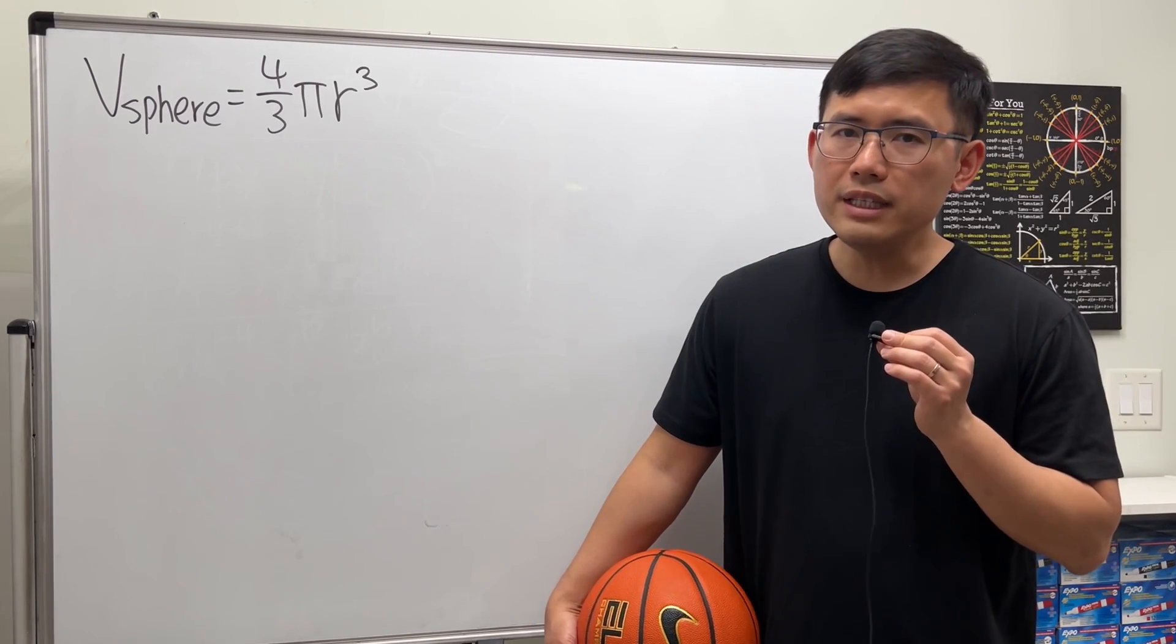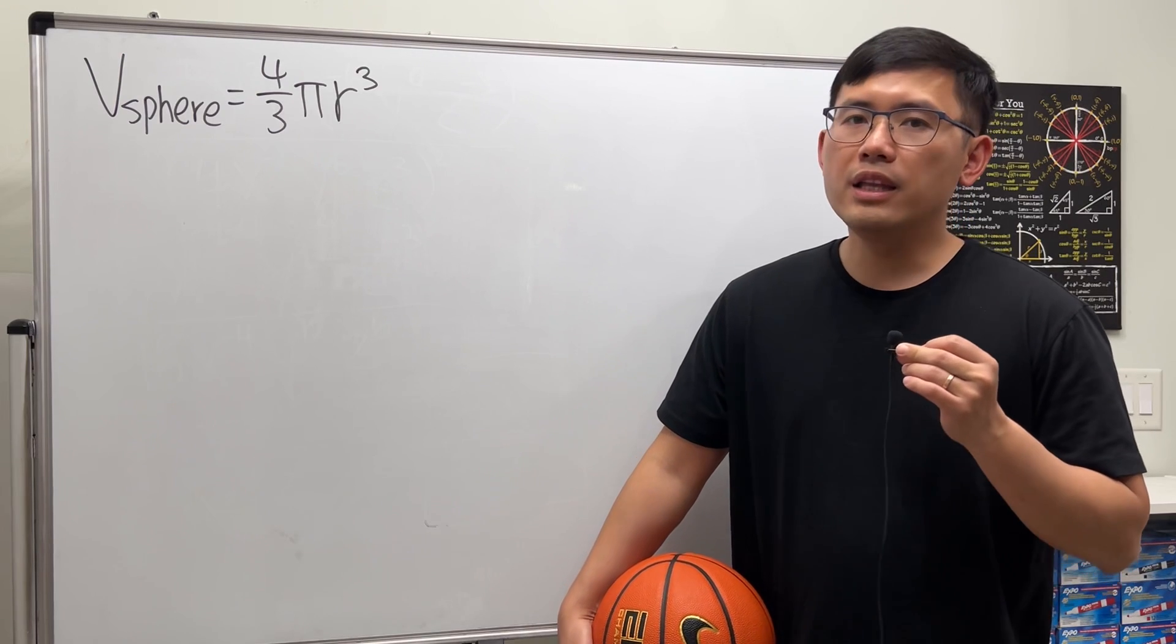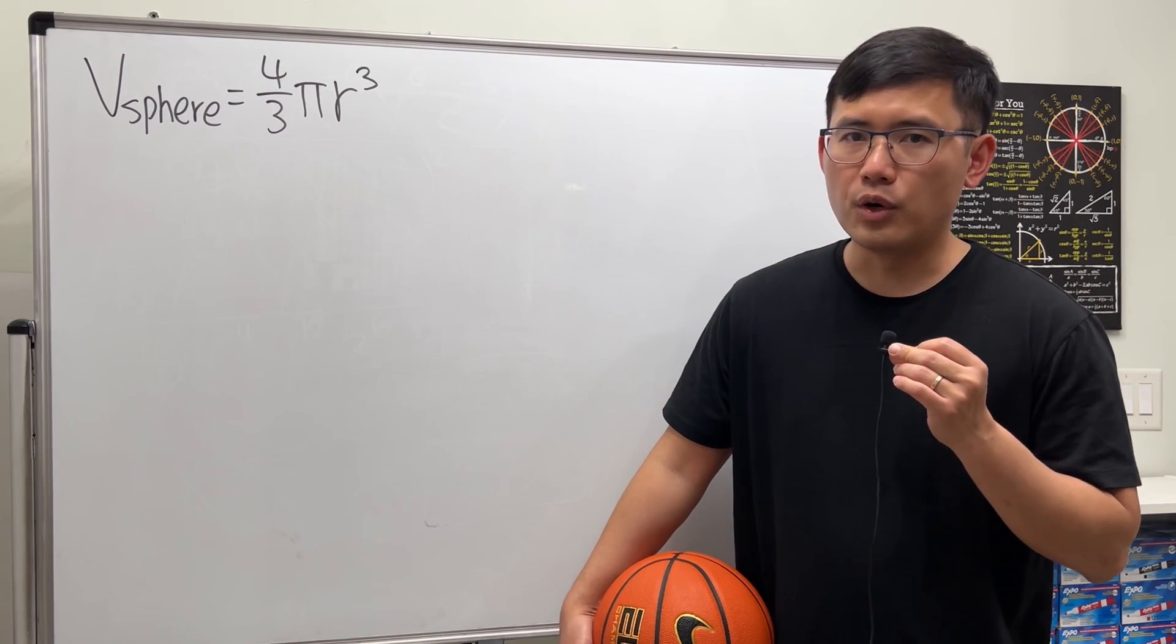Today, let's talk about why the volume of a sphere is equal to 4/3 πr³. And of course, we'll be using the disk method for finding the volume of revolution.